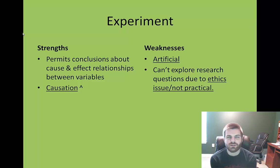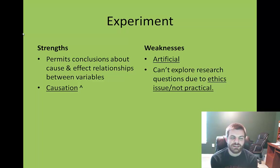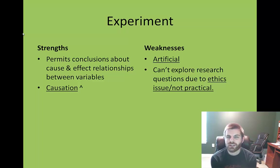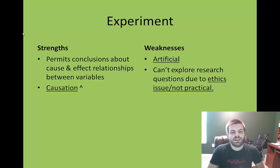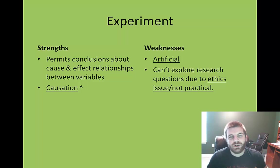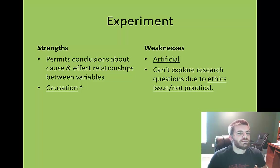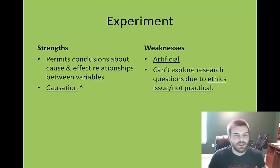The main strength of the experimental method is that it permits the ability to show a cause-and-effect relationship, often referred to as causation — basically meaning X may cause Y. One of the big weaknesses is that experiments are generally pretty artificial. You're manipulating things that may or may not actually happen in the natural environment, and there are some things that just cannot be studied because they're not practical. For example, you would not be allowed to study how certain hardcore drugs affect a pregnant woman because it may cause harm to the participant.